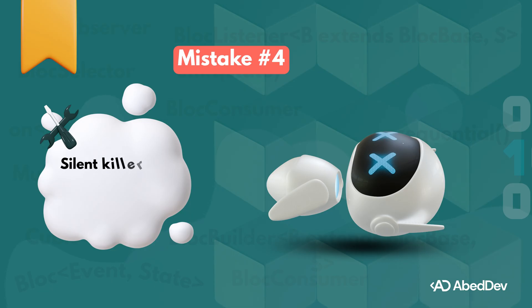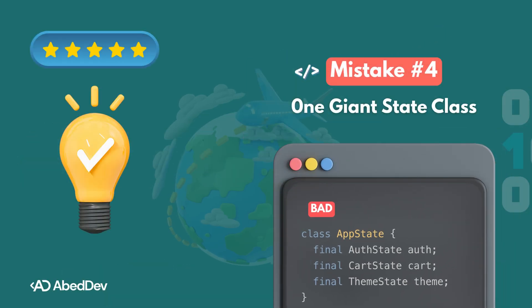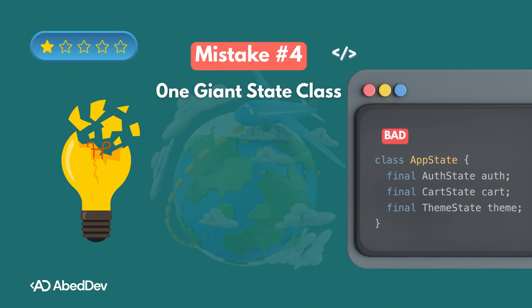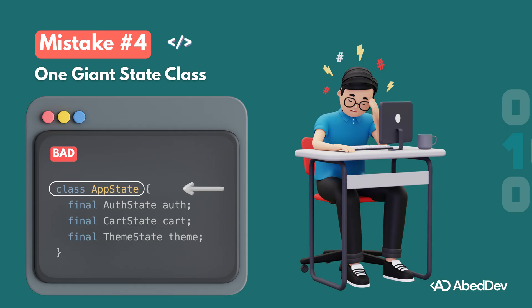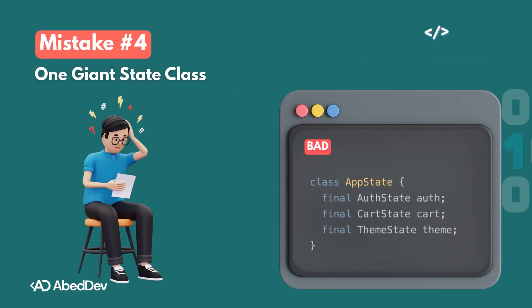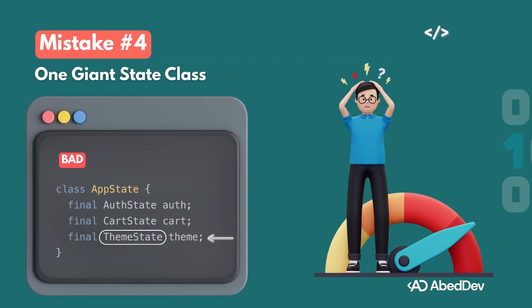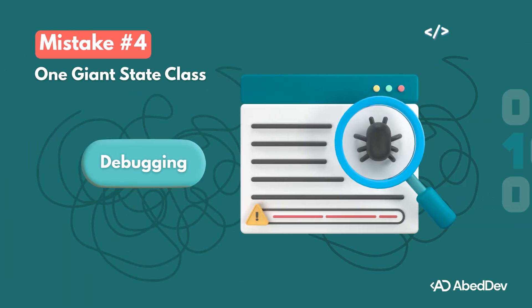Mistake number four is a silent killer for long-term maintainability: putting all your app's logic into one giant state class. At first it seems like a clever shortcut — one abstract class with everything: auth, cart, theme. Sure, it works, but as your app grows it becomes a problem. Your widget depends on AppState even though it only cares about the cart. You try to write a unit test for just the auth logic, but you have to mock the entire app state.